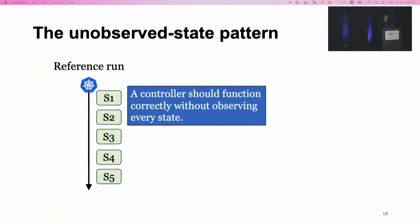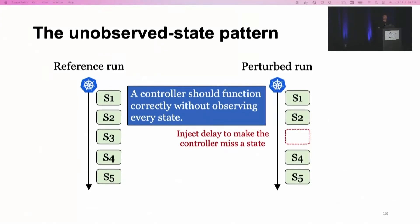The third and final pattern is the unobserved state pattern. A controller is supposed to function correctly without observing every single state — that is, as long as the controller can observe the current state, it should be able to reach the final desired state. To test this, SIEVE injects a delay to make the controller miss a particular state. Here, the controller misses S3 in its view but can still see the states after S3, and it is still supposed to reach the final desired state.